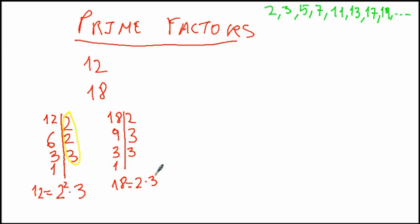We can divide again by 3 and the result is 1. So 18 is equal to 2 multiplied by 3 twice, so 3 to the power of 2. Now we have the way to write 12 and 18 as prime factors multiplied together.